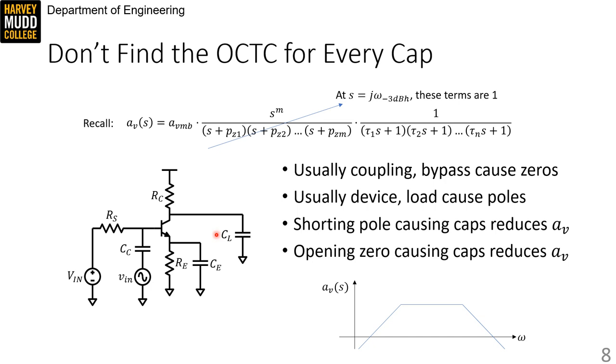You can also use a circuit trick to decide what caps cause high frequency poles and what caps cause low frequency pole zero pairs. And this trick starts by imagining that I'm operating in the mid band and gradually increasing my frequency.